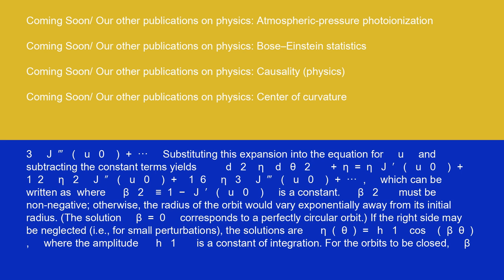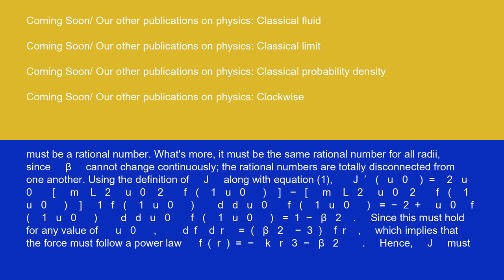β² must be non-negative. Otherwise, the radius of the orbit would vary exponentially away from its initial radius. The solution β equals zero corresponds to a perfectly circular orbit. If the right side may be neglected, i.e., for small perturbations, the solutions are η(θ) equals h₁ cos(βθ), where the amplitude h₁ is a constant of integration. For the orbits to be closed, β must be a rational number. What's more, it must be the same rational number for all radii, since β cannot change continuously. The rational numbers are totally disconnected from one another.